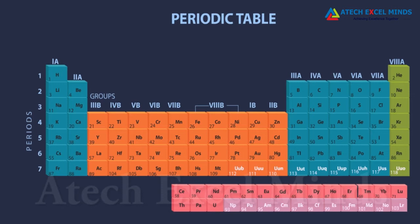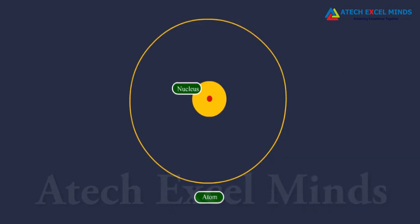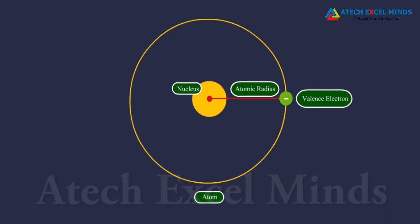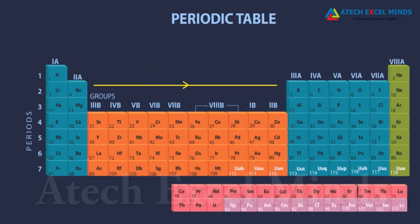Valency of an element is the number of valence electrons present in the outermost shell of its atom. Elements with the same valency are placed in the same group. Atomic size, that is the radius of an atom, is the distance between the center of the nucleus and the outermost shell of an isolated atom. Atomic size decreases moving from left to right along a period, due to an increase in nuclear charge.